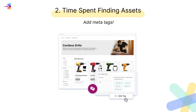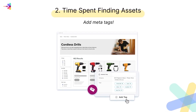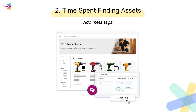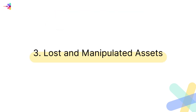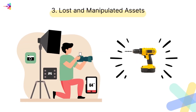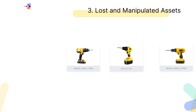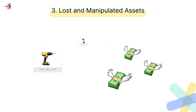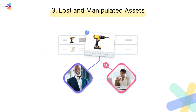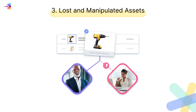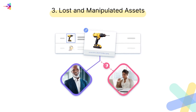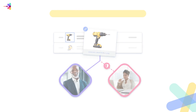Adding and managing metadata tags is crucial for efficient asset organization and searchability. The third challenge is lost and manipulated assets. Most businesses invest time and resources in creating and curating their digital assets. Losing or having them altered can have severe consequences. A robust DAM system ensures the assets are secure, versioned, and protected from unauthorized changes.